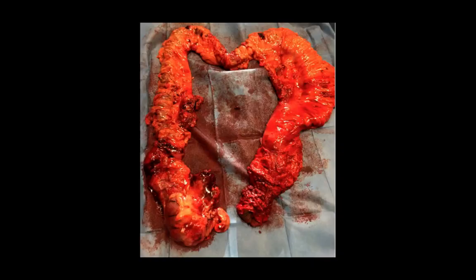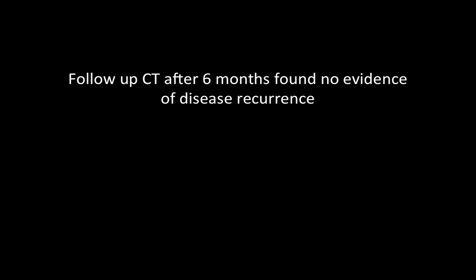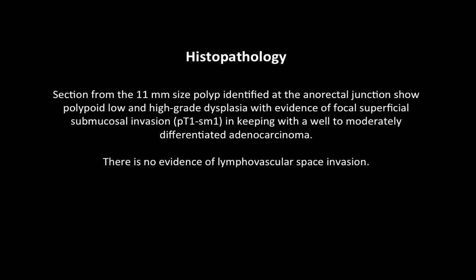The postoperative course was unfortunately complicated by the formation of an infected haematoma in the right rectus abdominis superior to the ileostomy. This was addressed with percutaneous drainage and antibiotics. The patient recovered well and follow-up CT at 6 months found no evidence of recurrent disease. Histology showed polypoid low and high-grade dysplasia with evidence of focal superficial submucosal invasion, in keeping with a well to moderately differentiated adenocarcinoma.